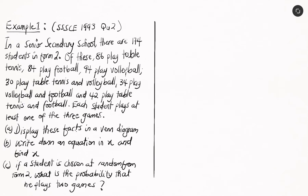In a senior secondary school, there are 174 students in form 2. Of these, 86 play table tennis, 84 play football, and 94 play volleyball. 30 play table tennis and volleyball, 34 play volleyball and football, and 42 play table tennis and football. Each student plays at least one of the three games.